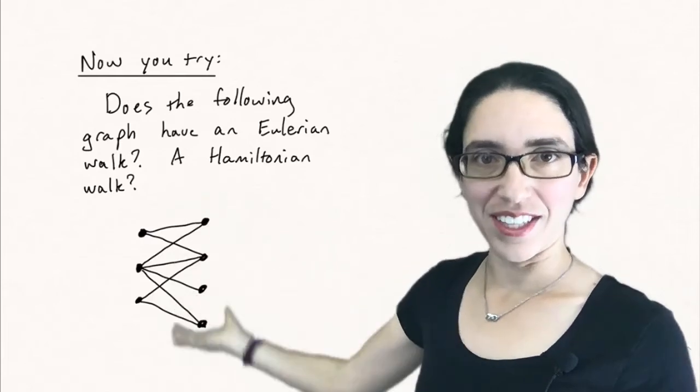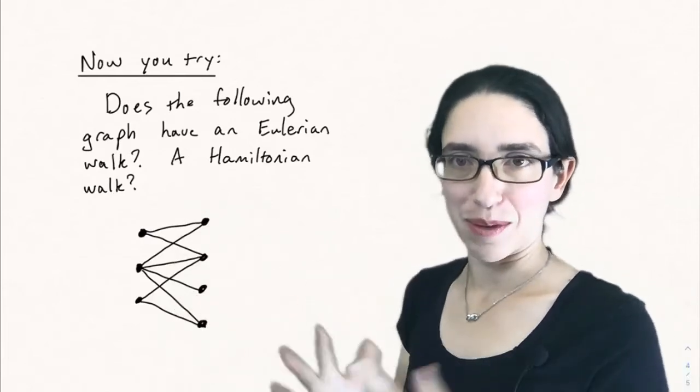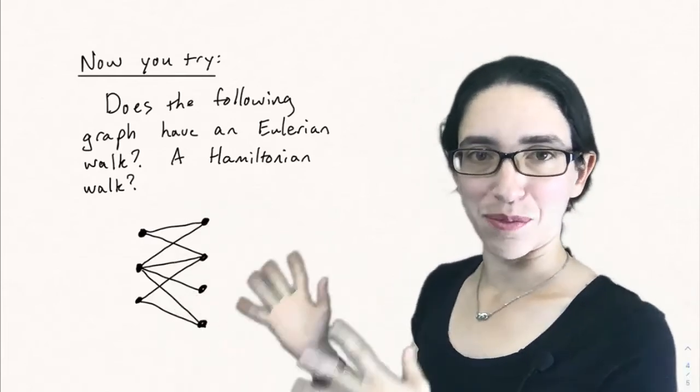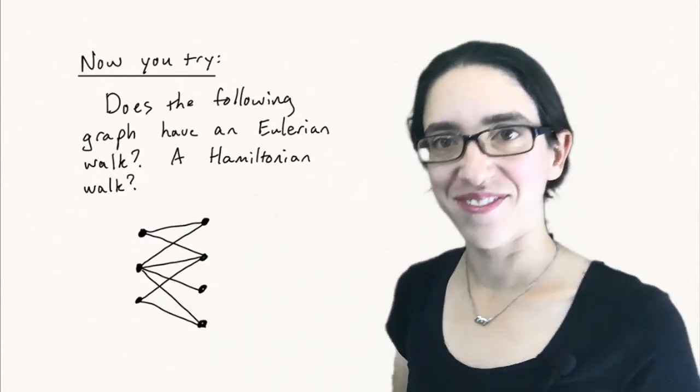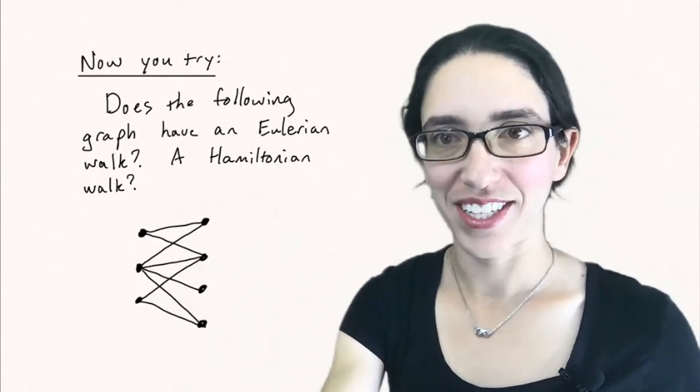So now you try in this graph, does that have an Eulerian walk and does it have a Hamiltonian walk? So try to find them. And if you can't find them, explain why. So that's all for today. And we'll see you next time.